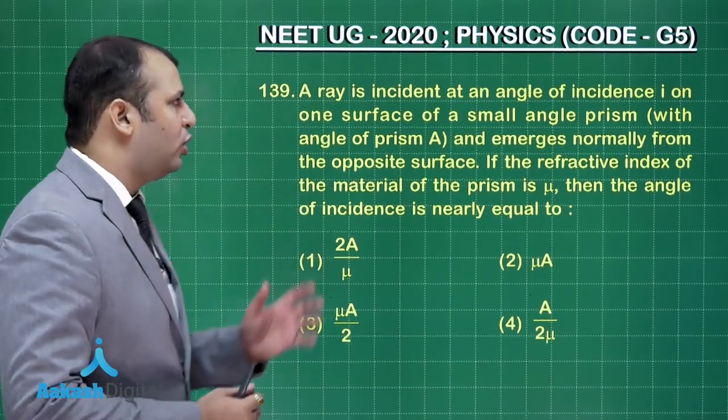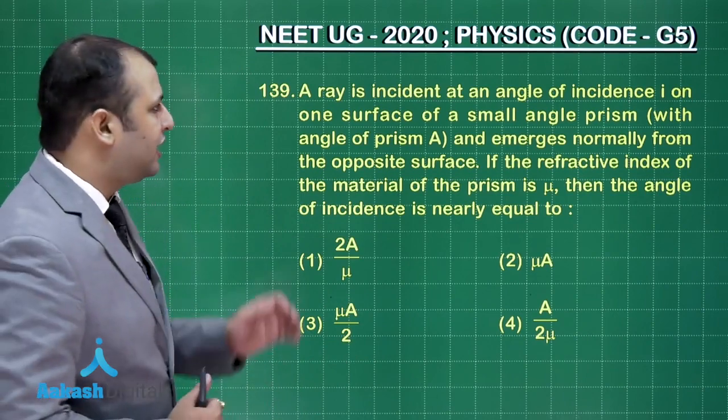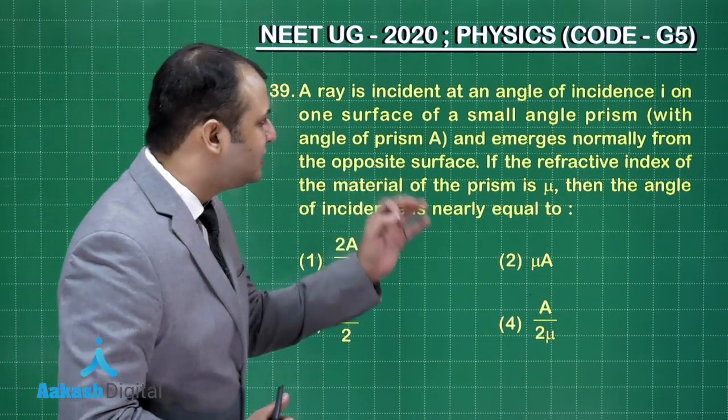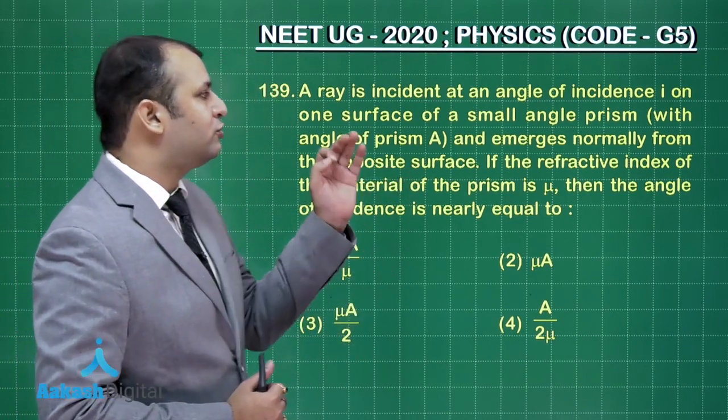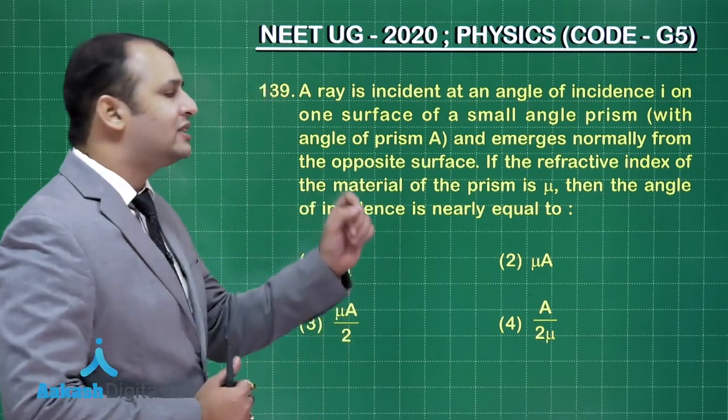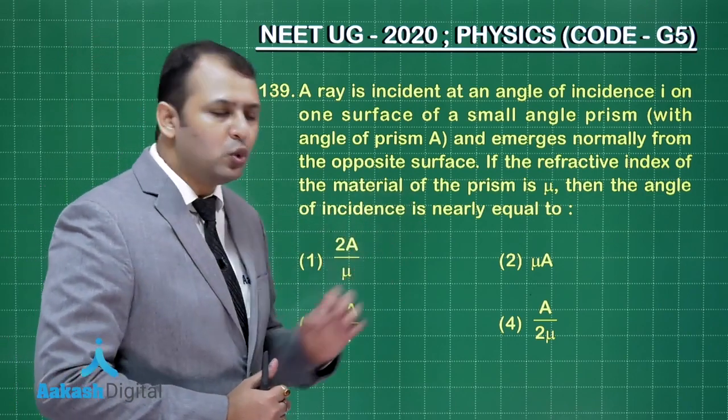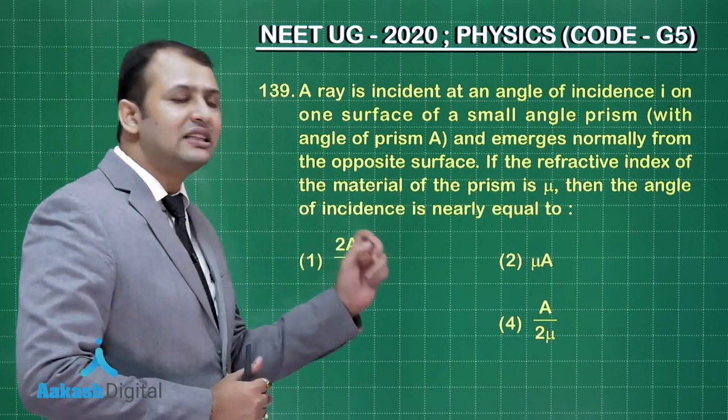Now this question number 139 belongs to chapter ray optics from the topic prism. As per the question, a ray is incident at an angle of incidence i on one surface of small angle prism and emerges normally from the opposite surface. If the refractive index of the material of prism is mu, then the angle of incidence is nearly equal to.